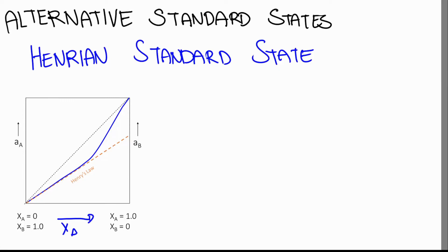For problems involving non-ideal solutions, especially dilute solutions, it is more convenient to express activities in terms of alternative standard states. One such alternative is the Henrian standard state. What we're doing is extending the treatment of the dilute solution to the pure form — treating the behavior of the solute as a dilute solution as if it is a pure substance. In this case, when we extend, this activity will be equal to 1 at X_A = 1, so this becomes H_A = 1.